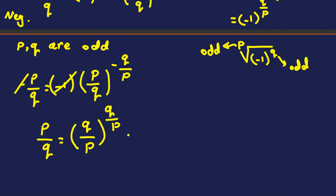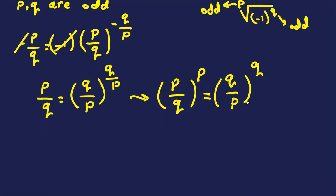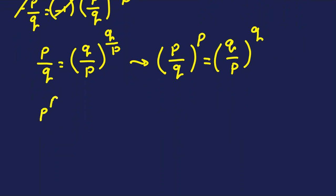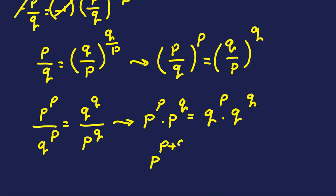Raising both sides of p/q = (q/p)^(q/p) to the power p gives: (p/q)^p = (q/p)^q. Cross-multiplying: p^p · p^q = q^q · q^p, which simplifies to p^(p+q) = q^(p+q).